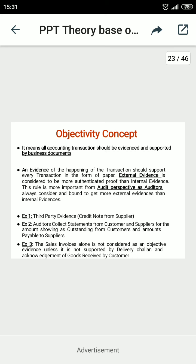For example, third-party evidence: a credit note is needed if goods are returned to a supplier, while a debit note is required if goods are returned by customers to the business. Auditors collect statements from customers and suppliers showing the outstanding amounts receivable from customers and payables to suppliers. This can be done with the help of invoices or bills as document proof. If a sales invoice is prepared, that is the main document, but it is not sufficient unless it is supported by a delivery challan or proof that the goods have been received by the customer.